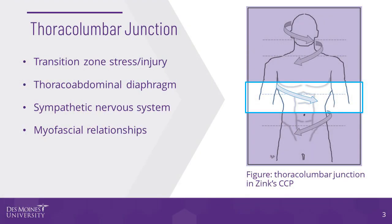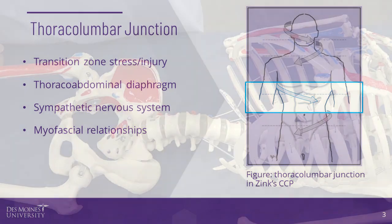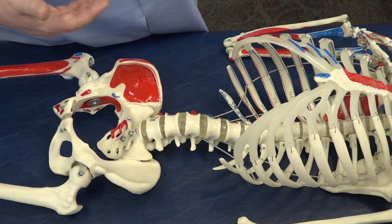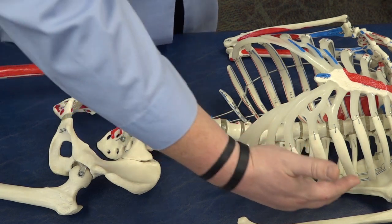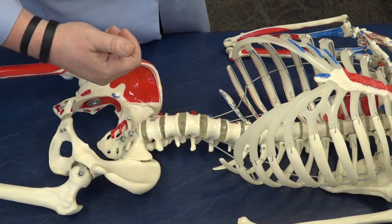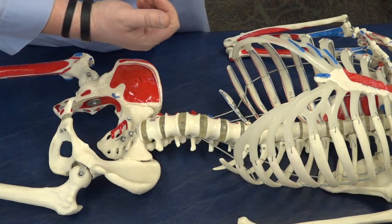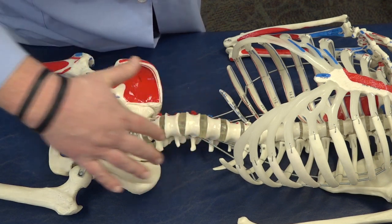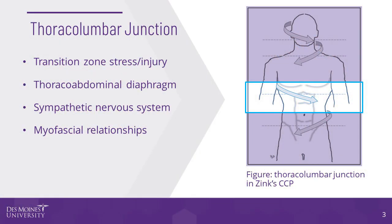The horizontal diaphragm associated with the thoracolumbar region of the spine is the thoracoabdominal diaphragm. The thoracoabdominal diaphragm has widespread attachments throughout the region, including to the lower six ribs, T12, L1 to L2 or L3, the xiphoid process of the sternum, and myofascial connections with the quadratus lumborum and psoas. The thoracoabdominal diaphragm is pump-like with regards to drawing in oxygenated air into the lungs.